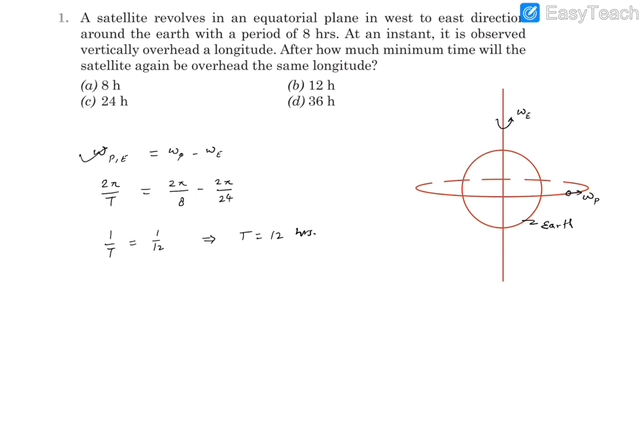The angular velocity of the satellite with respect to Earth can be written as the angular velocity of the satellite minus the angular velocity of Earth. Now we know that angular velocity is basically 2 pi by t, so we can write it as 2 pi by t. This is relative to the Earth.